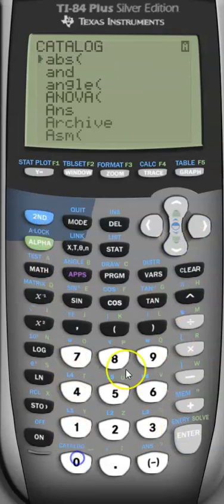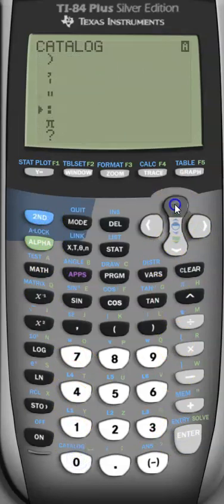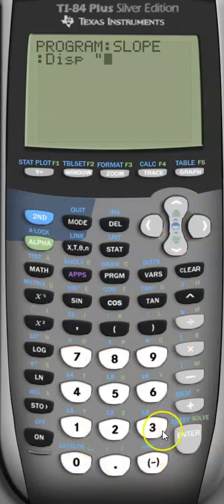I can never figure out where the quotation marks are. So it's easier for me to hit second and then catalog and just scroll up to get them. And I'm going to display that I have an X. I'm going to put a comma in there and then I'll put an alpha Y. So you know what the first point will look like.